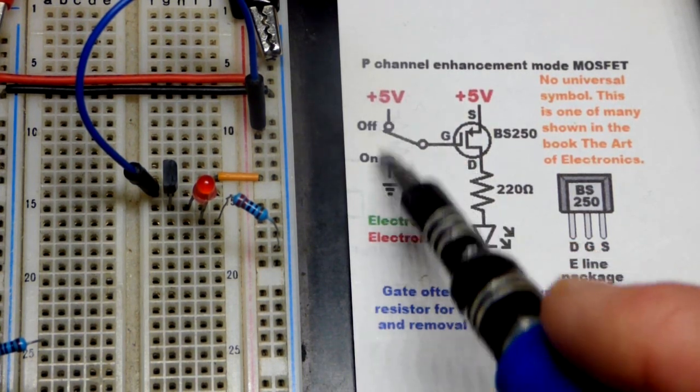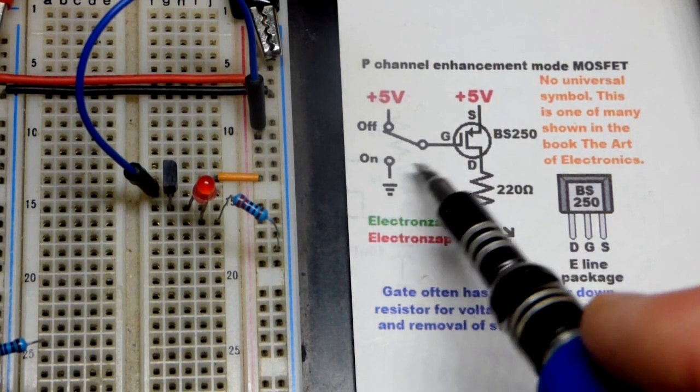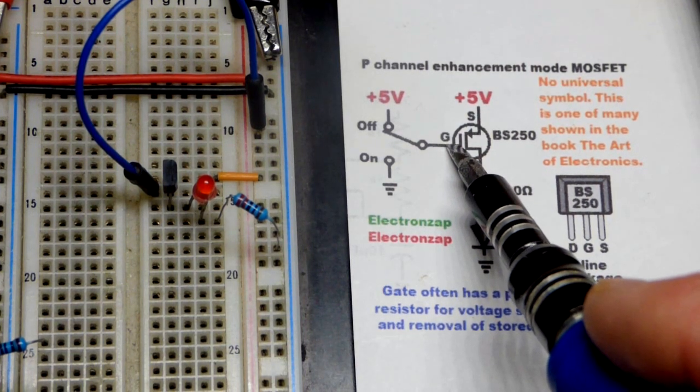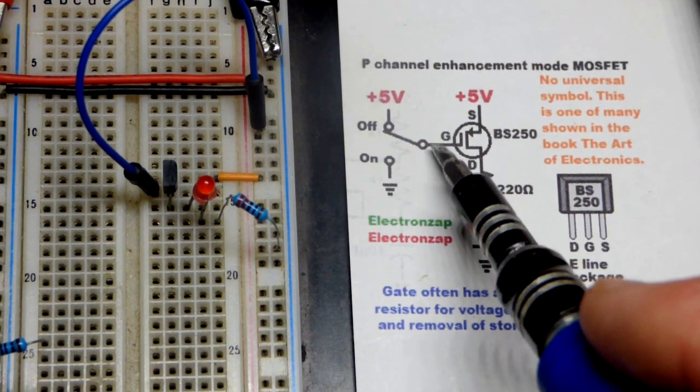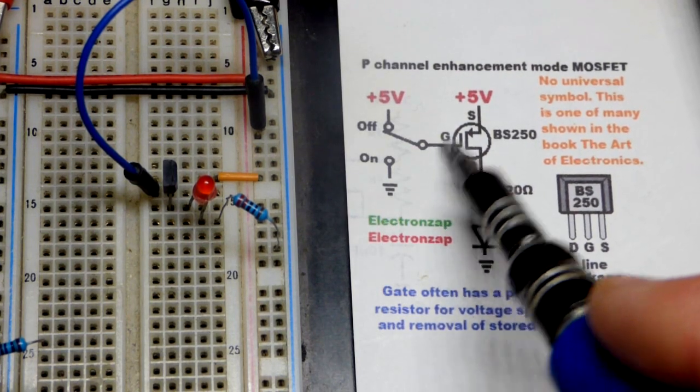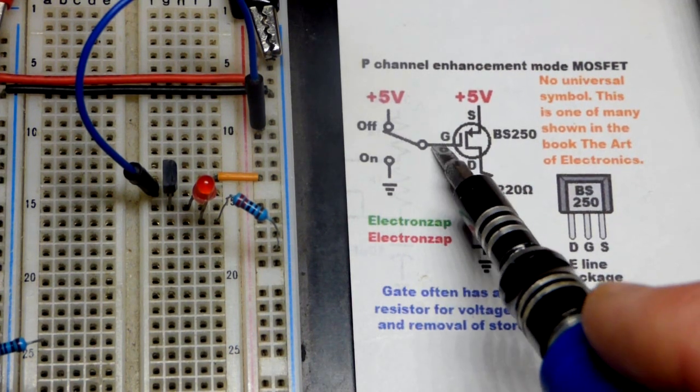Now there is a little bit of current that flows when you change the voltage, and so you may want to cut that down a little bit, prevent like a static shock or something from damaging the gate because they are a little easy to damage. I haven't damaged one yet, but I damaged integrated circuits with CMOS in them.